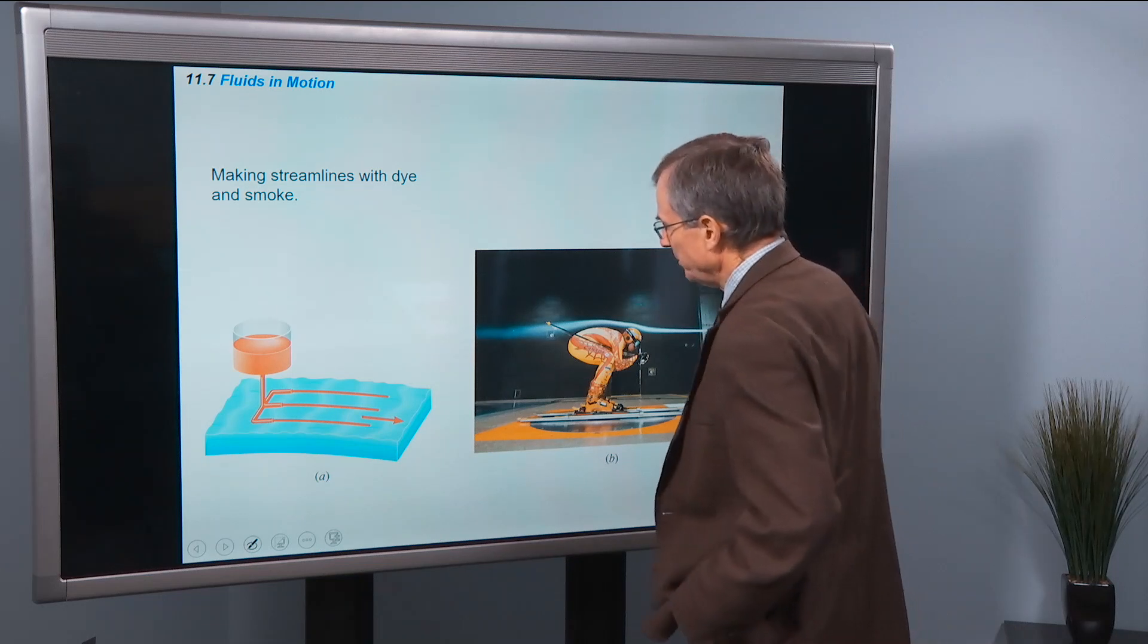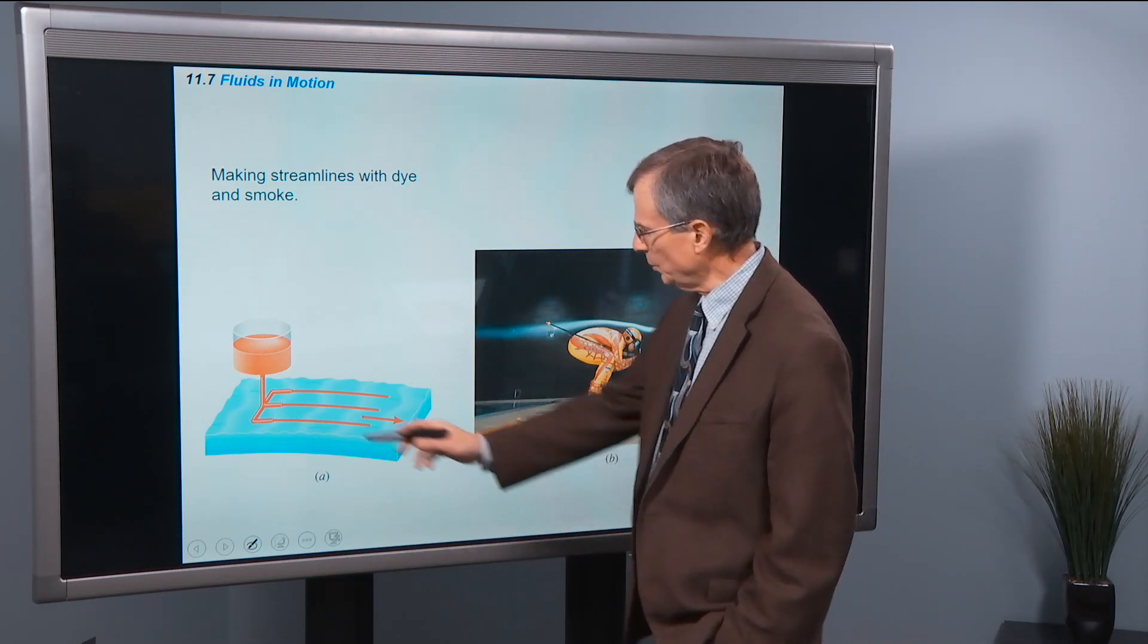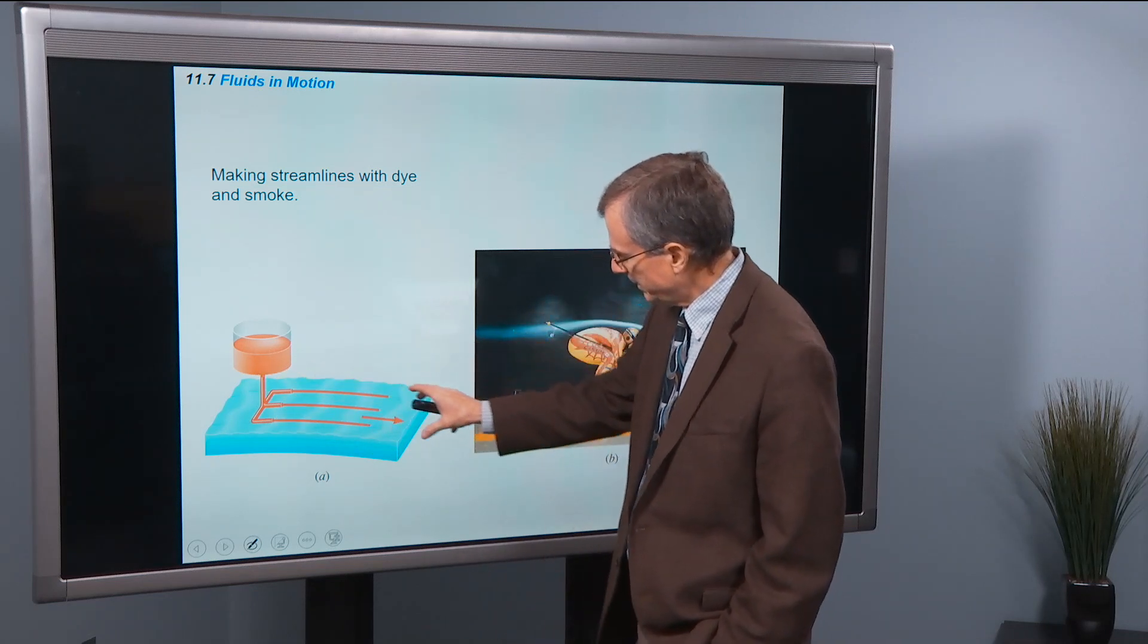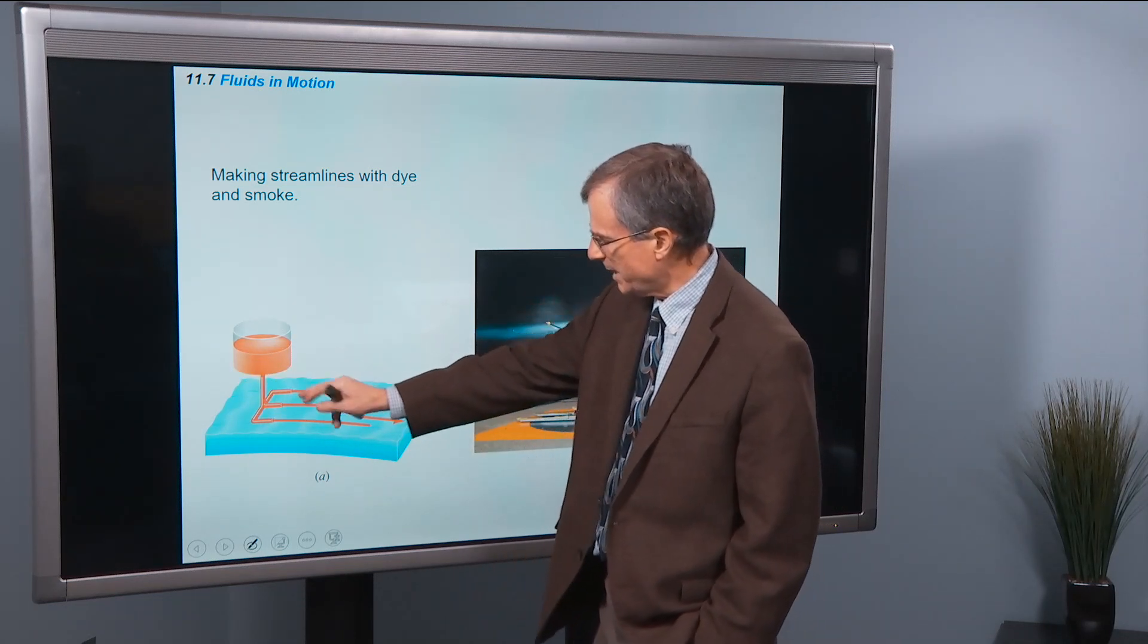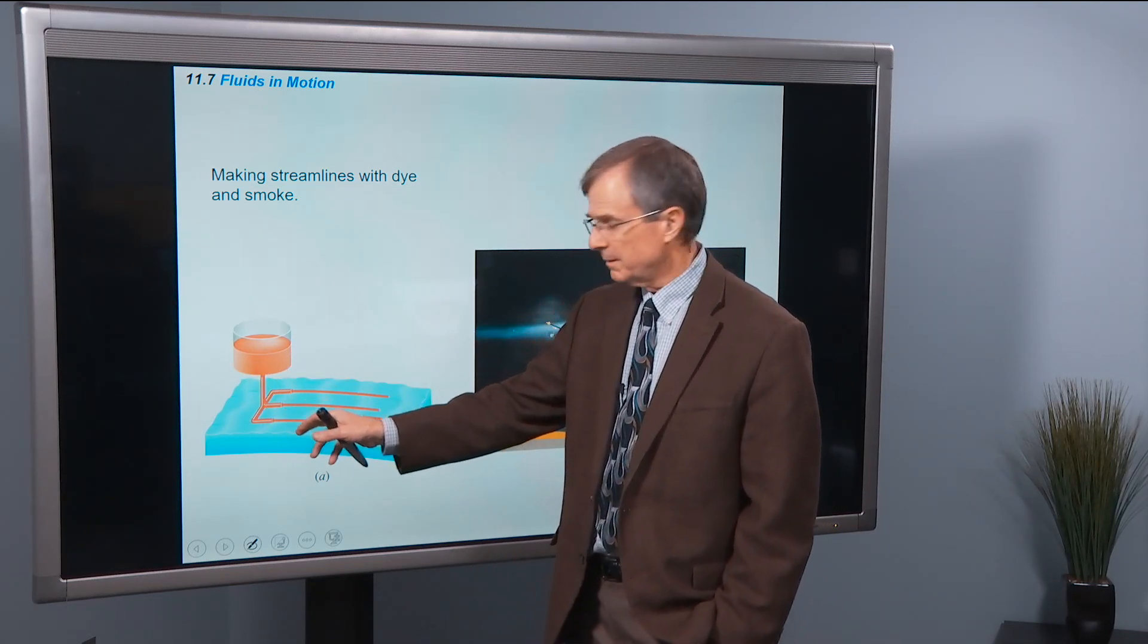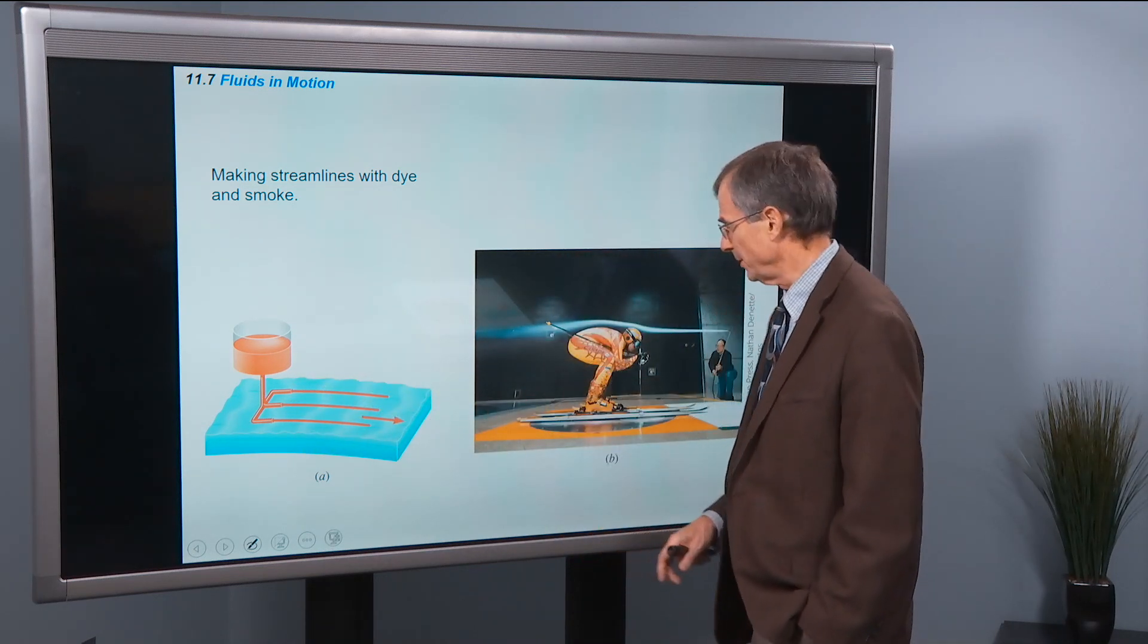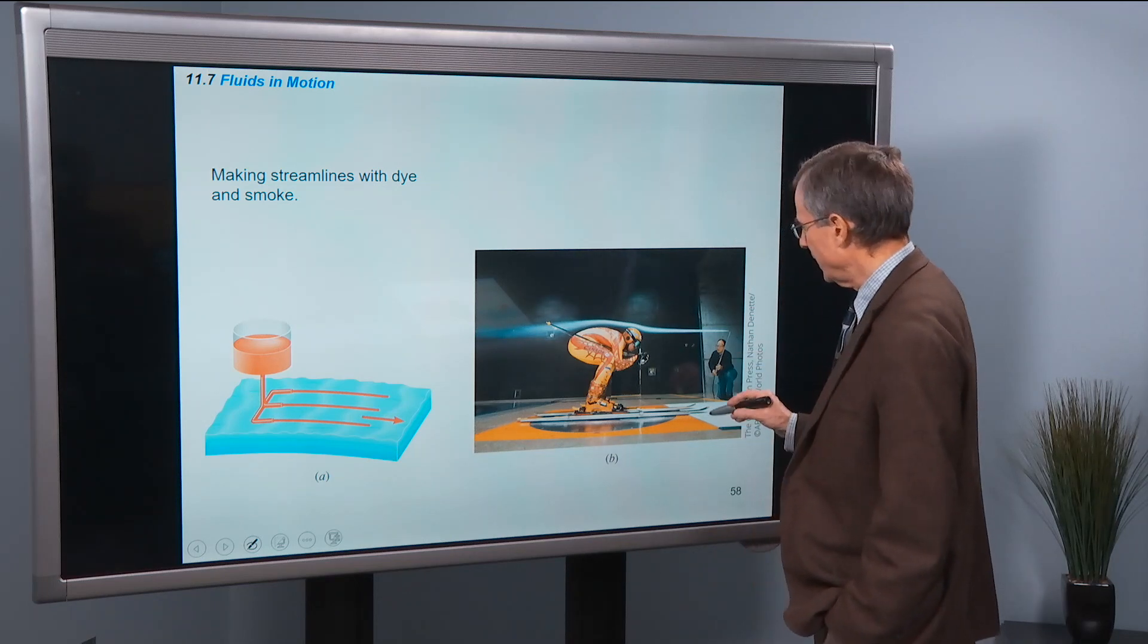So you can make streamlines with dye. So you're releasing dye and then as the water flows past these glass tubes and it carries the fluid along to measure streamlines, or you can do it in an air chamber.